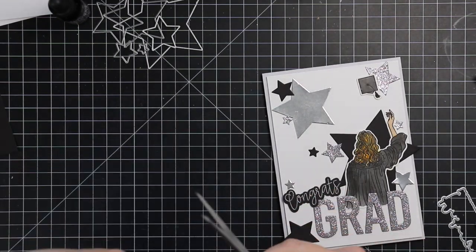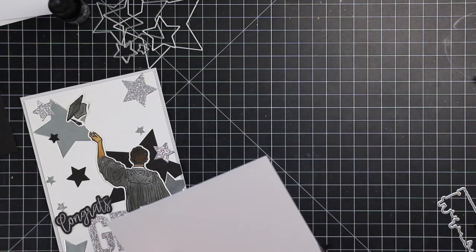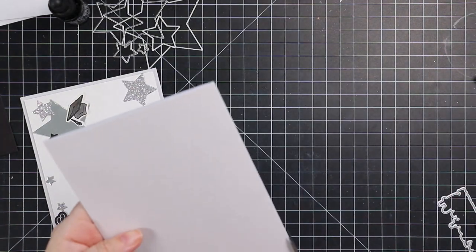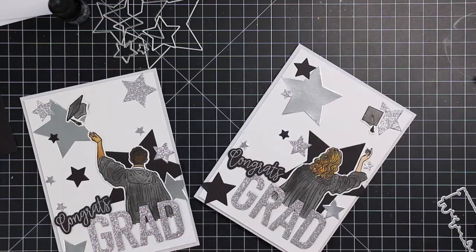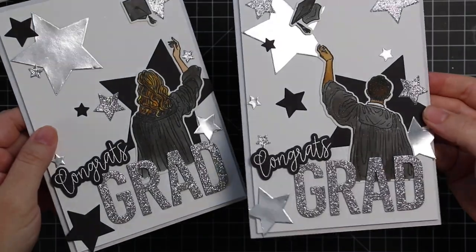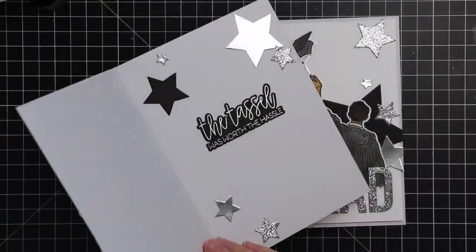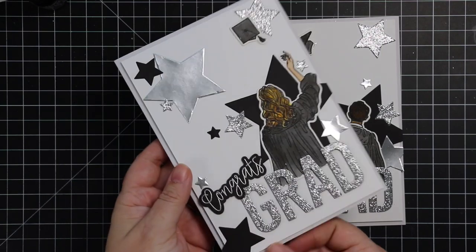Once all that was done and the adhesives dried, I flipped over these card fronts and just trimmed off any of the pieces of the stars that are hanging over the edges with scissors and that finished these off. So they're all silver and glittery and shiny and shimmery, just fun and really easy to make.